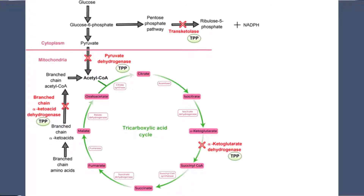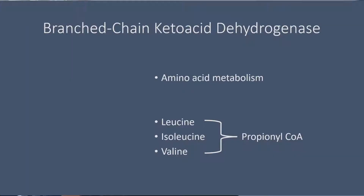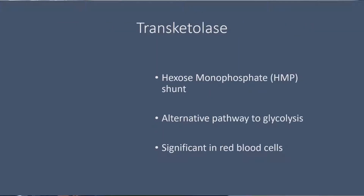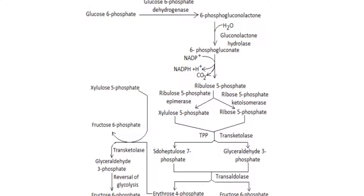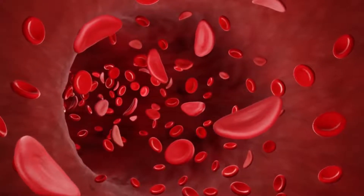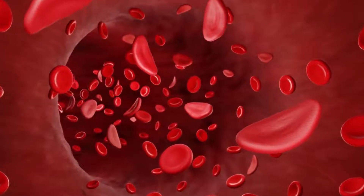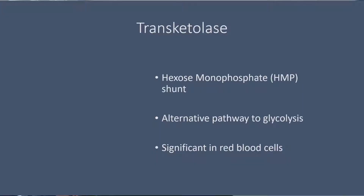Branched-chain ketoacid dehydrogenase is part of amino acid metabolism — it converts branched-chain amino acids, which are leucine, isoleucine, and valine, into propionyl-CoA. Finally, transketolase catalyzes a step in the hexose monophosphate shunt, or HMP shunt. This shunt is an alternative pathway to glycolysis, and in certain cells like red blood cells that cannot perform glycolysis, it is the only way to metabolize glucose.